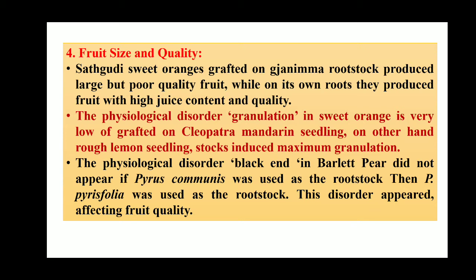While on its own rootstock, they produced fruit with high juice content and quality. The physiological disorder of granulation in sweet orange is very low when grafted on Cleopatra mandarin seedlings. On the other hand, rough lemon seedling rootstock induced maximum granulation. Granulation is a very major problem in the citrus group of crops, and by using different rootstock we can increase or decrease it.